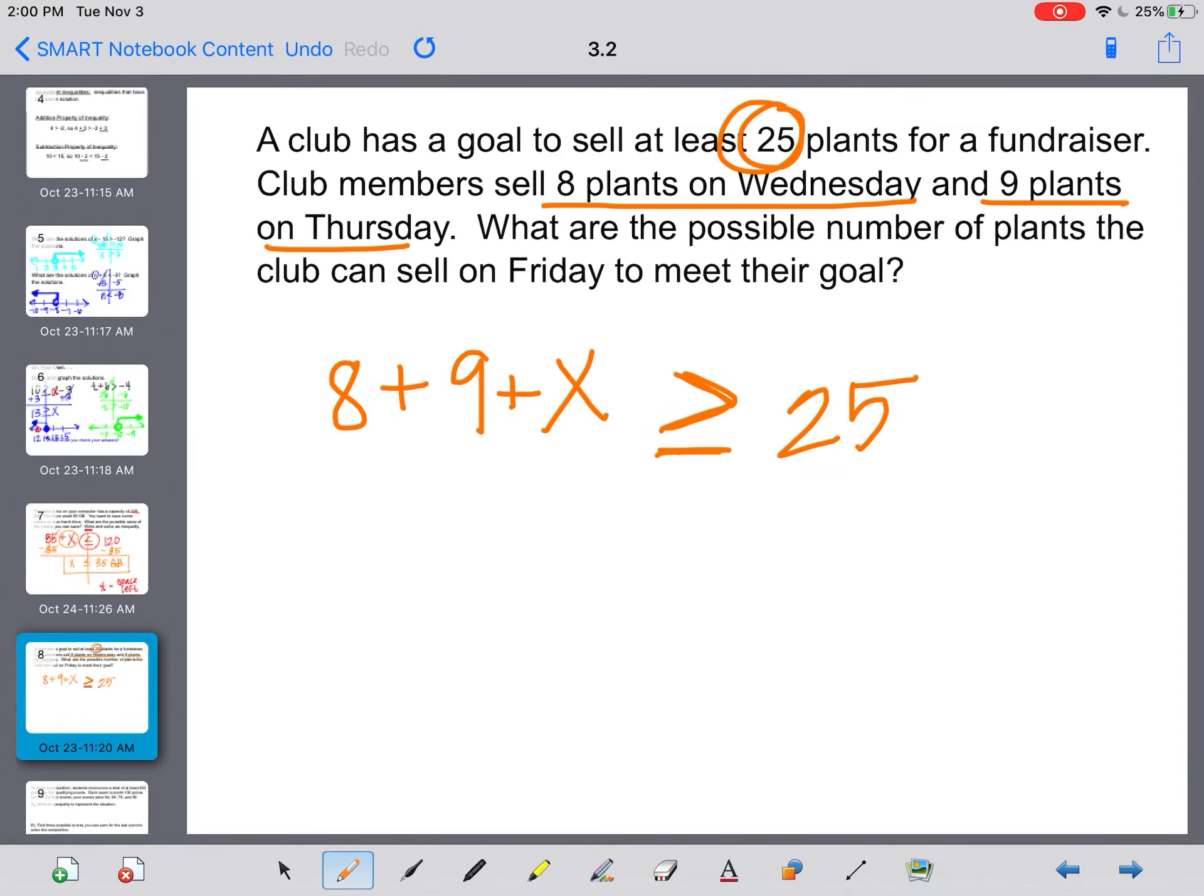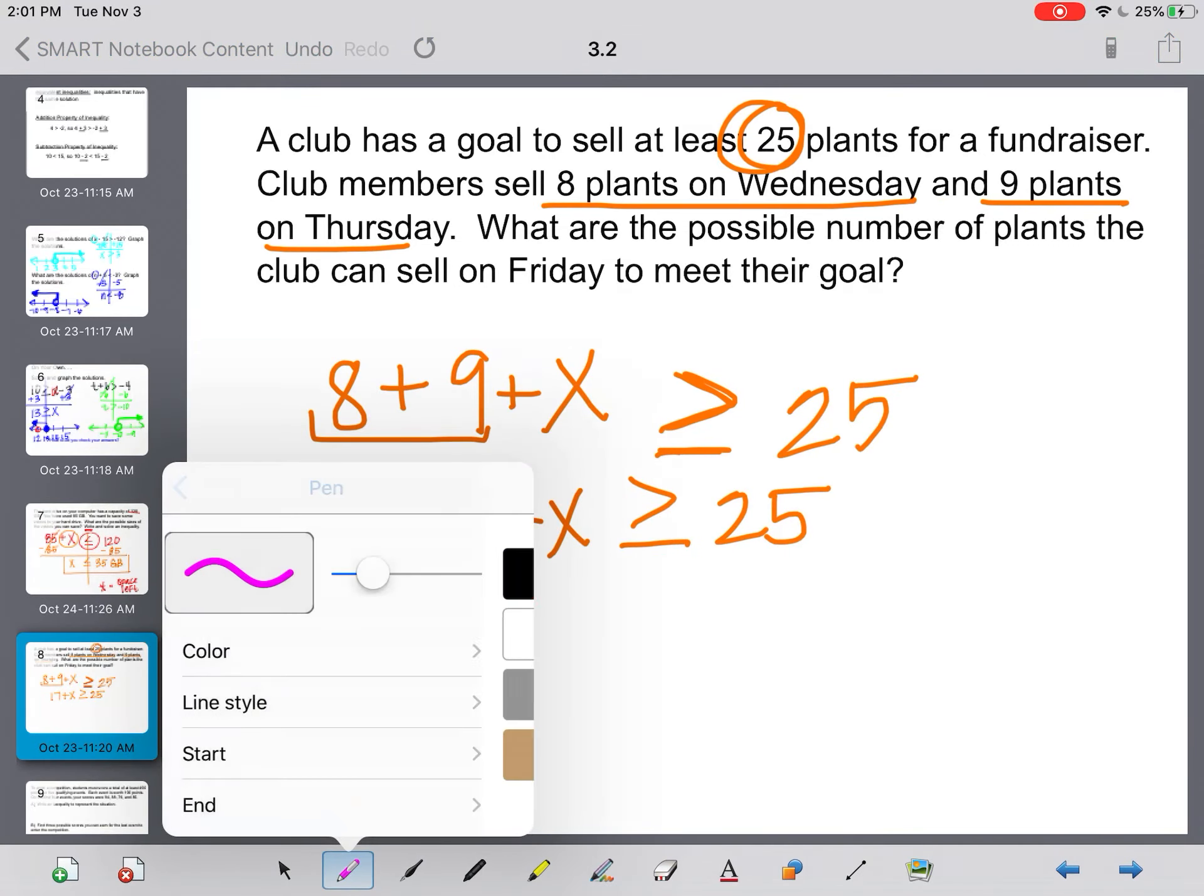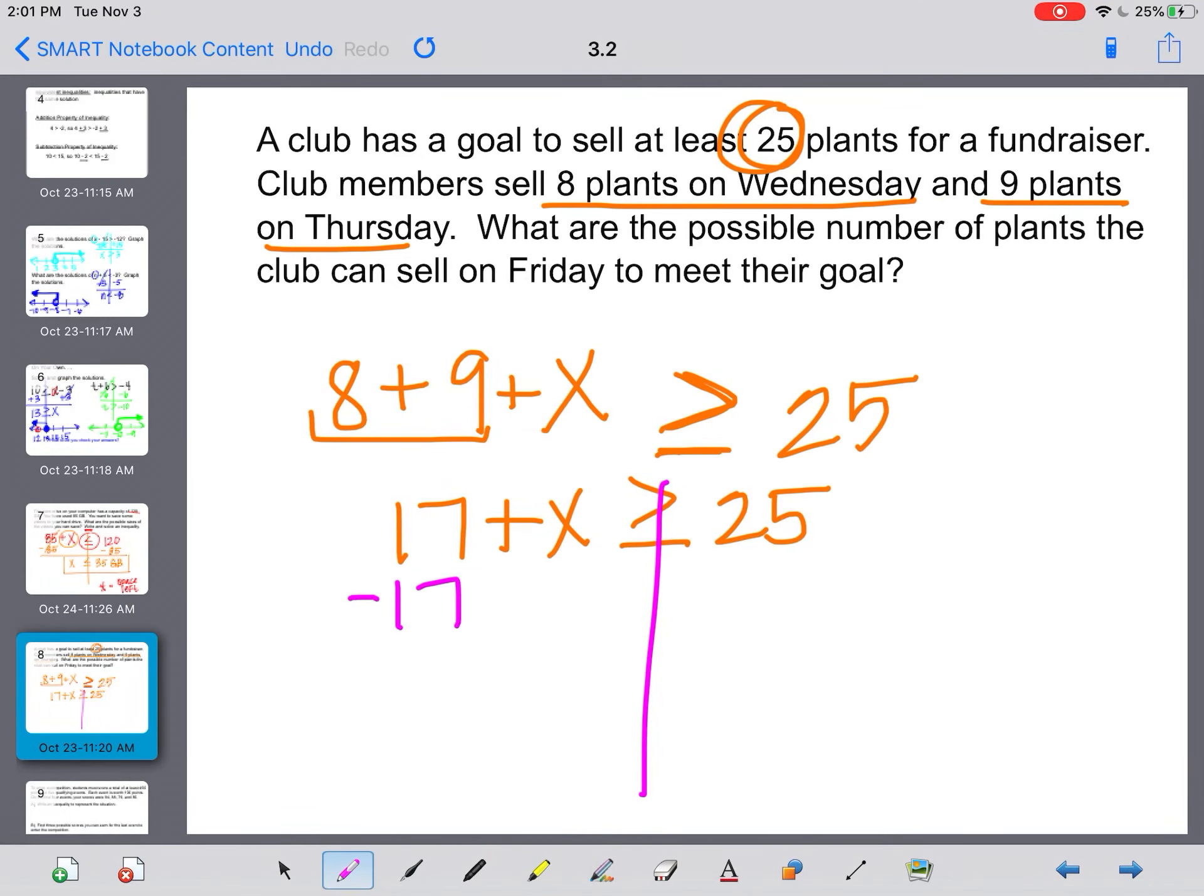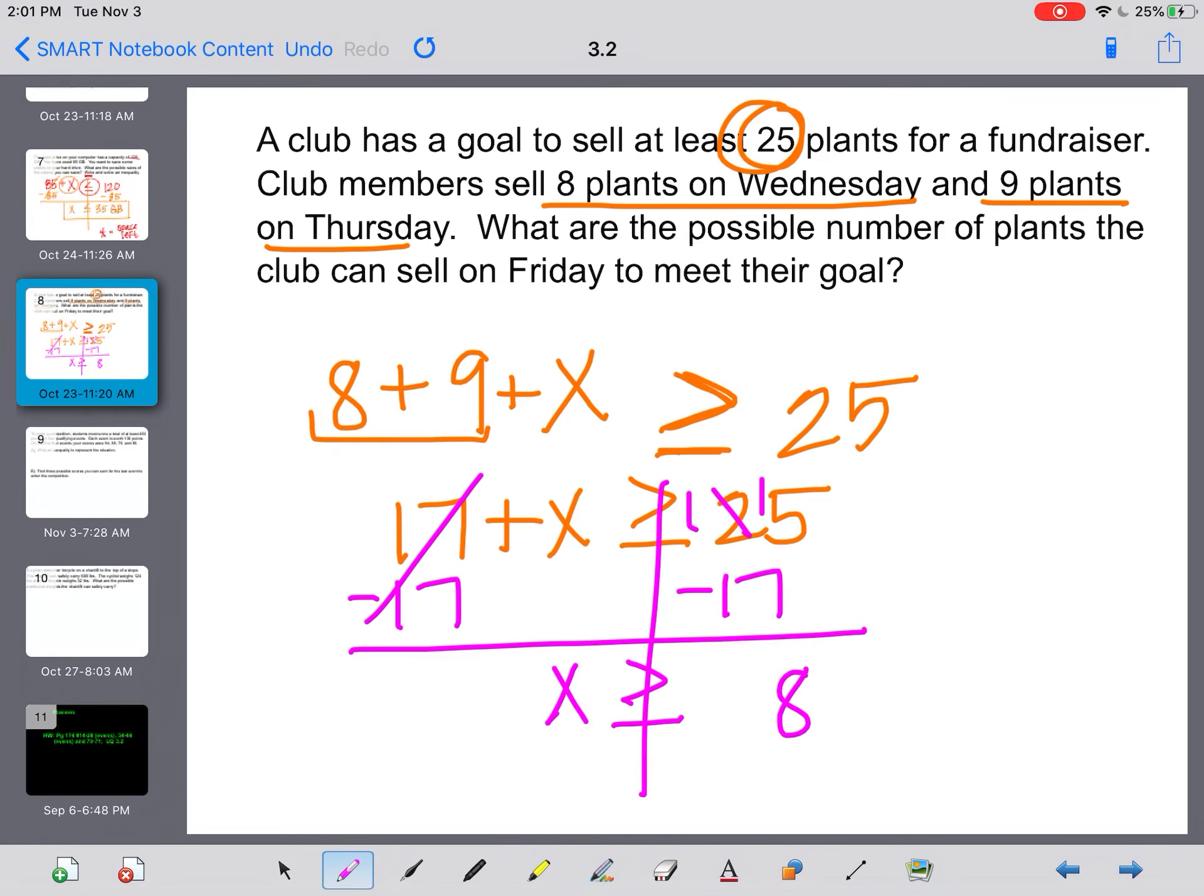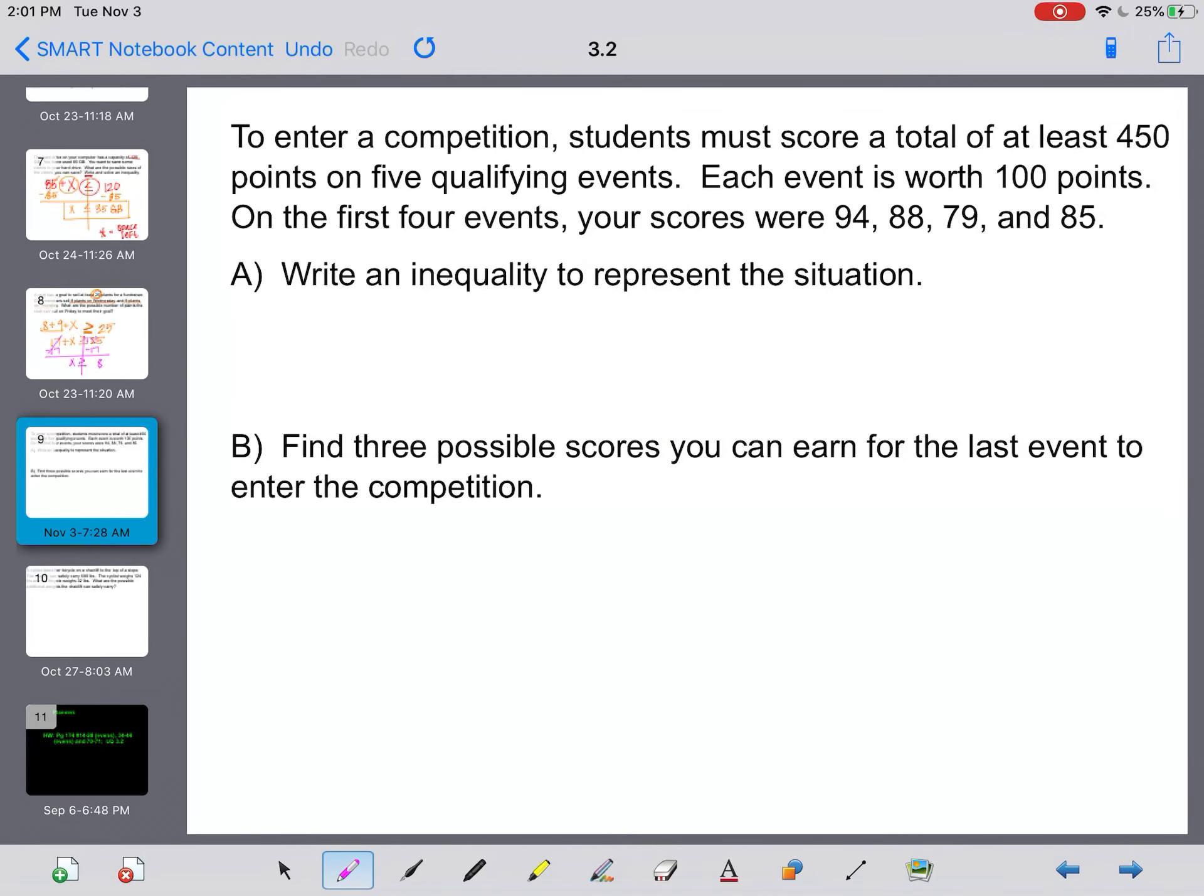Okay. Now, what they've already sold is 8 and 9, and we have one more day that we don't know about. So here is our inequality. I can simplify it by actually adding the 8 and the 9. So I have 17 plus x is greater than or equal to 25. Then when I try to solve it, I want to keep the x, so I'm going to subtract the 17. And that leaves me with x is greater than or equal to 8. As long as they sell 8 or more, greater than or equal to 8, they will meet their goal.